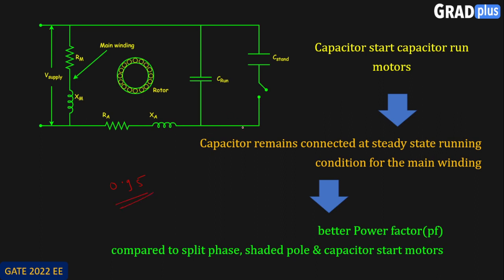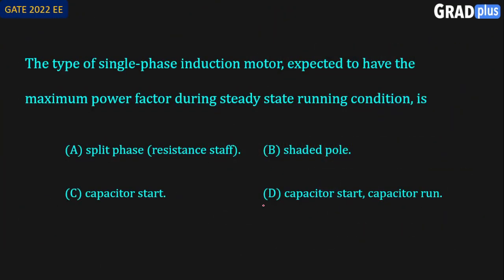We can conclude that the capacitor start capacitor run induction motor has a better power factor compared to the split phase, shaded pole, and capacitor start motors. The capacitor C-run is always connected to the main winding at steady state running condition, and this also gives higher starting torque. Therefore, the correct option from these choices is capacitor start capacitor run, that is option number 4 — option D.